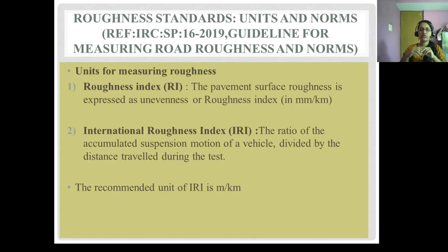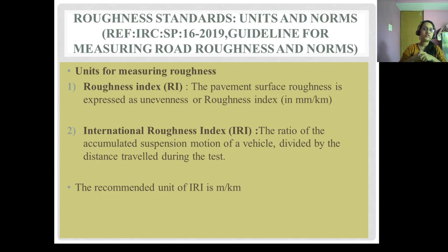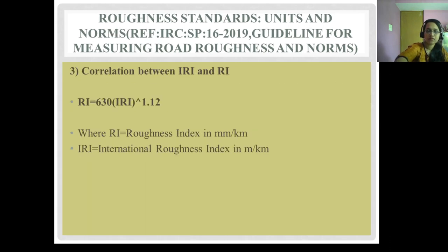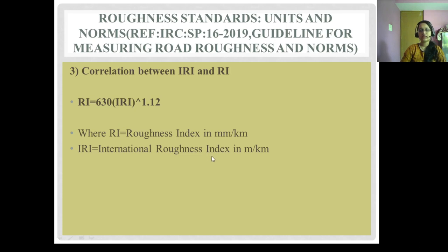The units of measuring roughness: the first is the Roughness Index or RI, where pavement surface roughness is expressed as unevenness or roughness index in mm per kilometer. Next is the International Roughness Index or IRI, which is the ratio of accumulated suspension motion of a vehicle divided by the distance traveled during the test, in meters per kilometer. The correlation between IRI and RI is: RI = 630 × IRI^1.12, where RI is in mm/km and IRI is in m/km.